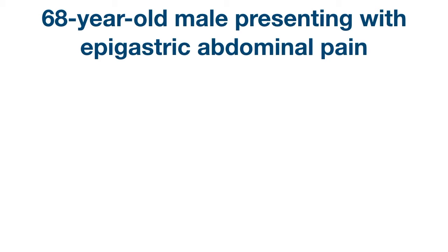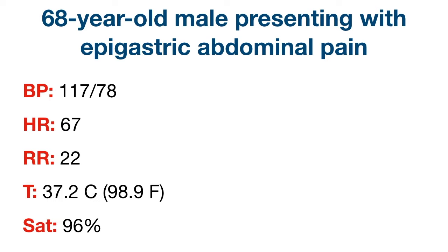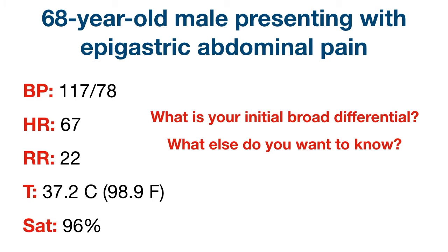The initial triage information you have on the patient is they're a 68-year-old male presenting with epigastric abdominal pain. Their vital signs on arrival are blood pressure of 117 over 78, a heart rate of 67, a respiratory rate of 22, a temperature of 37.2 Celsius or 98.9 Fahrenheit, and an O2 saturation of 96%. Now hit pause and start to think about a broad differential diagnosis and what other questions you would have for the patient. We'll show you the differential diagnosis at the end so we don't ruin the case.